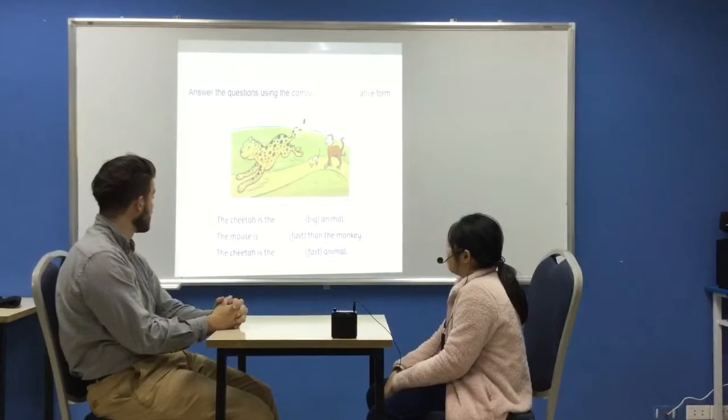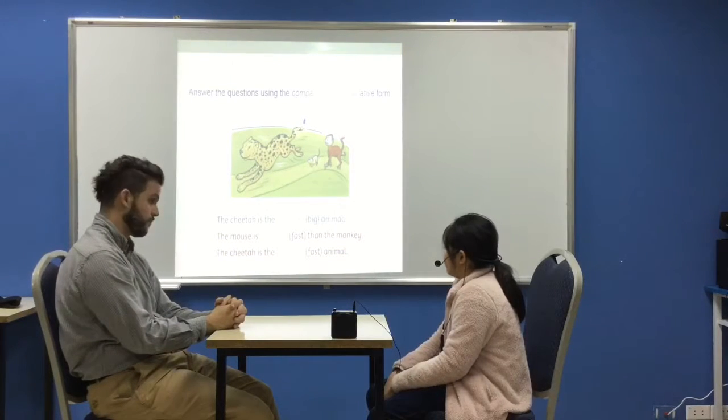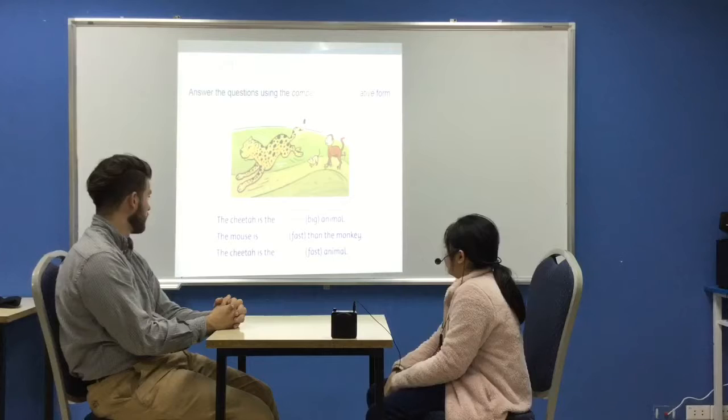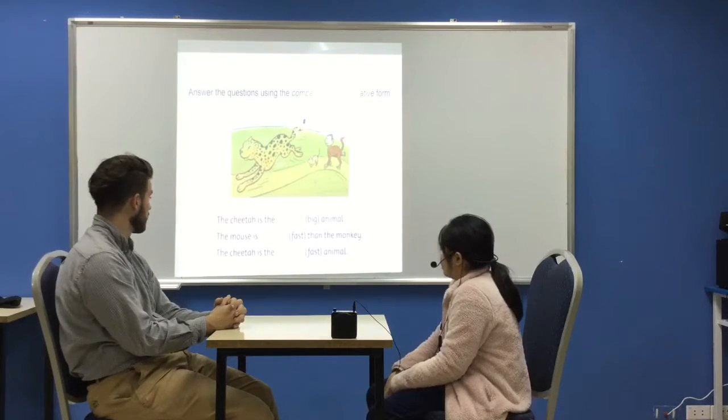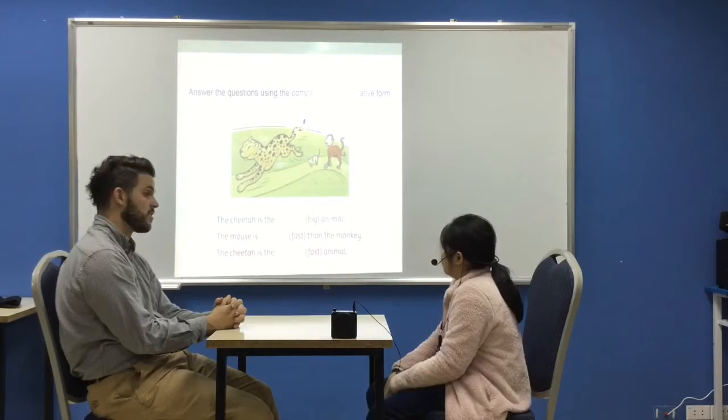And finish these three sentences here. Good. The cheetah is the biggest animal. Good. The mouse is faster than the monkey. Good. The cheetah is the fastest animal. Not true.